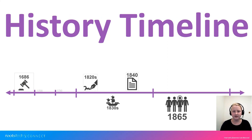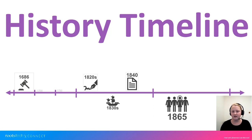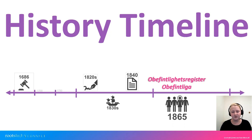A warning about household record indexes: around 1865, the church teamed up with tax authorities to create a record of missing persons, kept within the household examination book. Your ancestor may appear on one of these lists, making you think they're still alive or in the parish when they actually aren't. From about 1865 to 1894, these will show up in household record indexes. Check the top of the page for something like 'Obifindlighetsregister' or 'Obifindliga' — if you see that, they are on a missing persons record, not a normal household examination record.